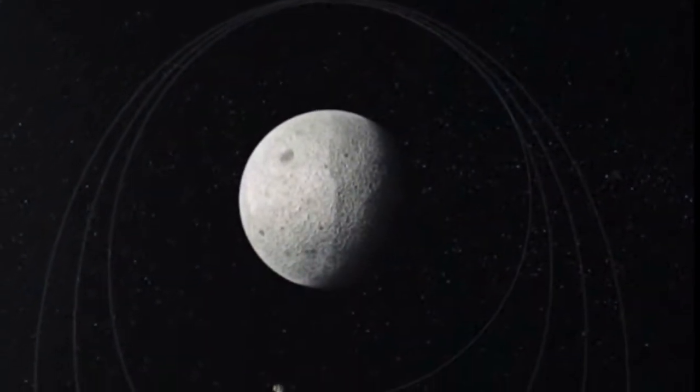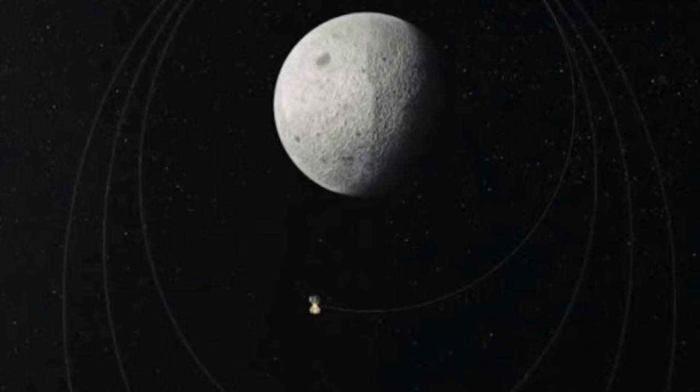India's attempt to create history by becoming the first nation to land on the south pole of the moon faced a setback after Vikram lander lost communication just before soft landing.